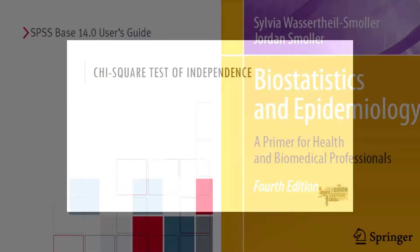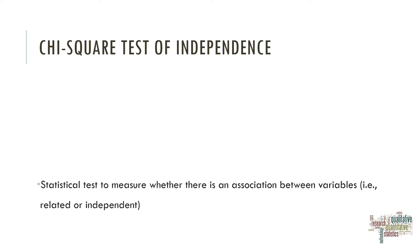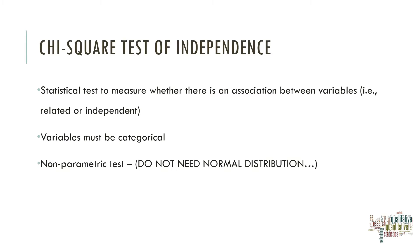The Chi-Square Test is a statistical test that measures whether there is an association between variables. These variables must be related or independent, and they must be categorical — they can't be continuous. This is a non-parametric test, so we do not need a normal distribution as an assumption. Similar to correlations, this test does not provide any inferences about causation.